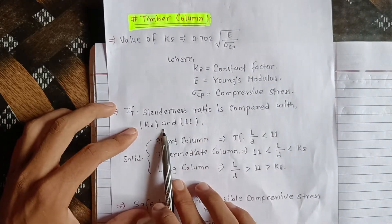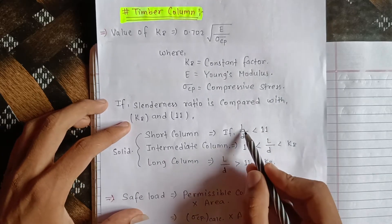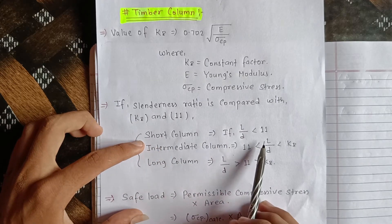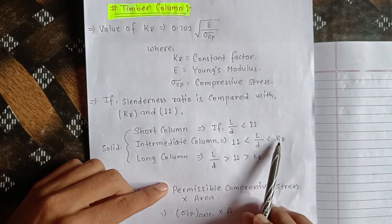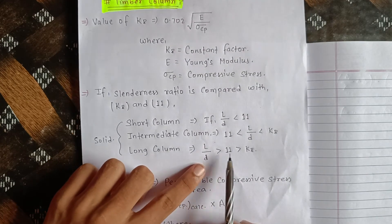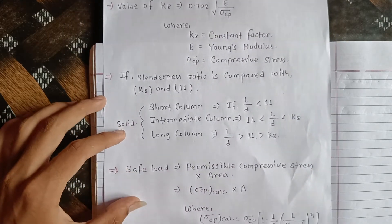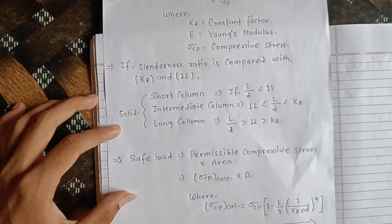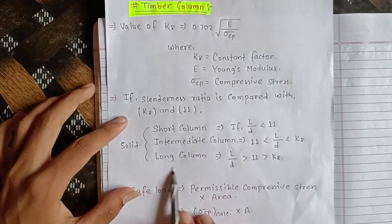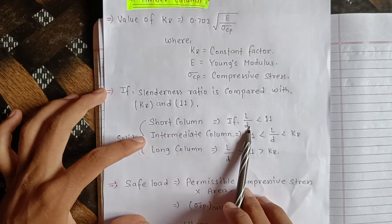If the slenderness ratio is compared with K8 and 11: if the slenderness ratio L/D is less than 11, it is a short column; if L/D is between 11 and K8, it is an intermediate column; and if L/D is greater than K8, it is a long column.